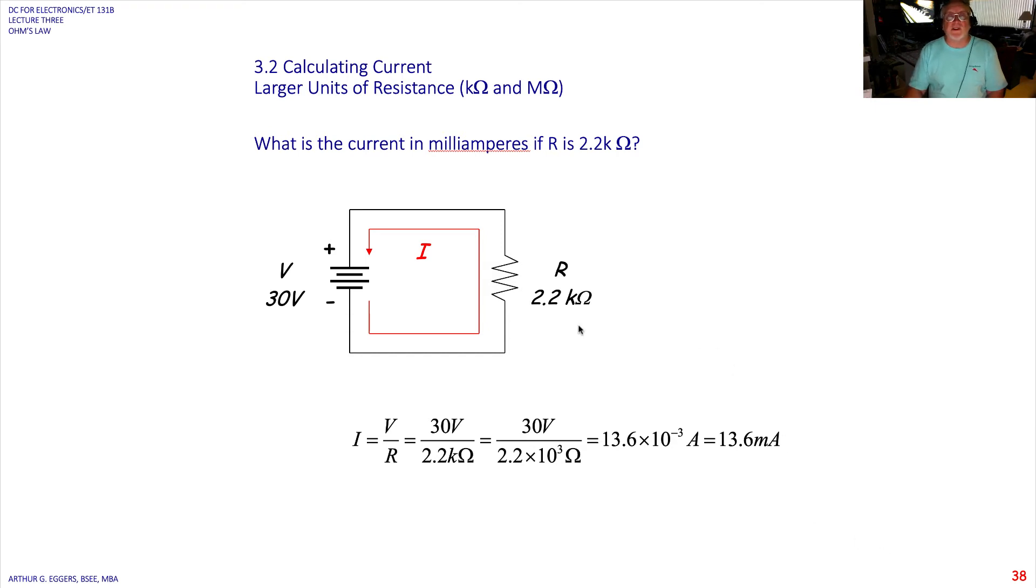What if we change the value of the resistor to 2.2k ohms? So voltage over resistance. We have 30 divided by 2.2k. 2.2k times 10 to the third ohms. Again, we move that into the numerator. 2.2 divided into 30 gives us 13.6, or we have 13.6 milliamps.